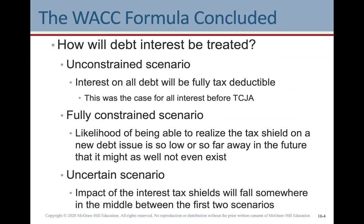In terms of debt interest using WACC — and this is from a US perspective; Canada is more straightforward — there are three scenarios for how debt interest will be treated. In the unconstrained scenario, interest on all debt will be fully tax deductible, which was the case before the Tax Cuts and Jobs Act of 2017 in the United States. Under the fully constrained scenario, the likelihood of realizing a tax shield on new debt is so low or so far away that it might as well not exist. Under the uncertain scenario, the impact of interest tax shields falls somewhere in the middle.